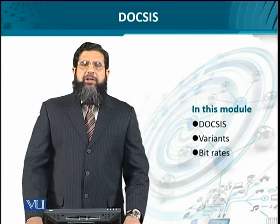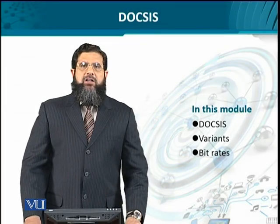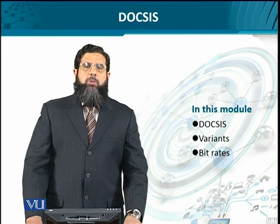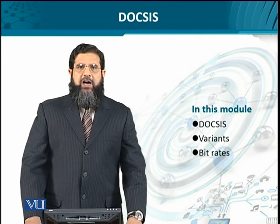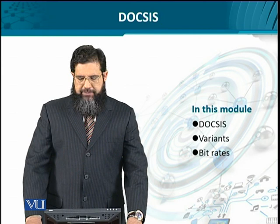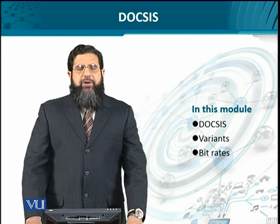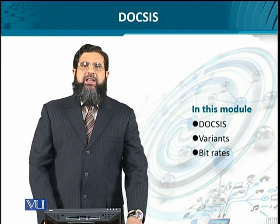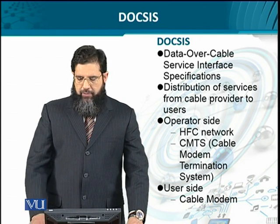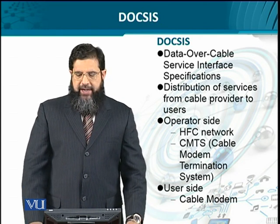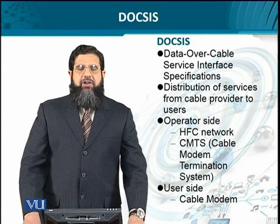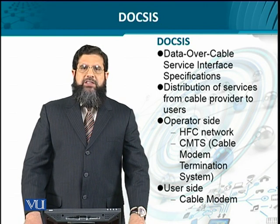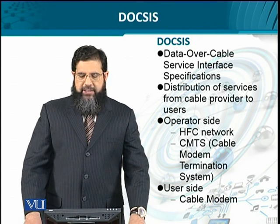In our earlier module, we looked at the packet cable network specifications and the DOCSIS specifications as the two most noteworthy aspects of the overall cable network architecture. So we shall continue with DOCSIS here — we'll define what DOCSIS is, what the variants are, and how each variant differs in terms of the data rate it offers. DOCSIS is formally the transmission of data over cable, defining how different interfaces should be specified for providing various kinds of services.